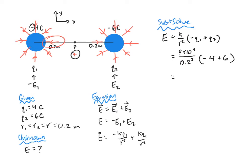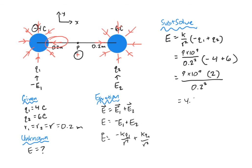So what that gives me is that E is equal to 9 times 10 to the ninth times negative 4 plus 6, or 2, divided by 0.2 squared. And when I stick that in a calculator, I get that E is equal to 4.5 times 10 to the 11th newtons per coulomb at point P.